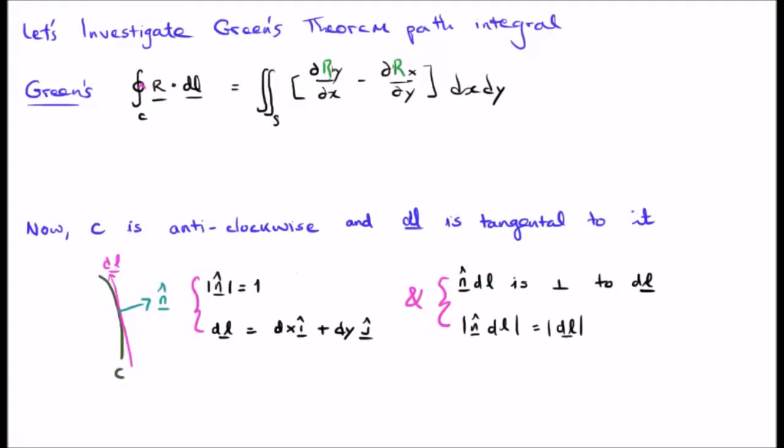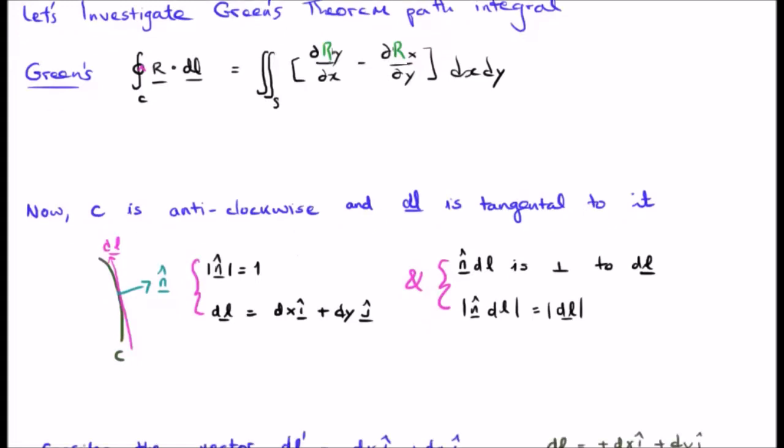So Green's theorem is written there at the top of your screen. As I said at the start, C is anti-clockwise and DL of course has to be tangential to it. That's the definition of DL.